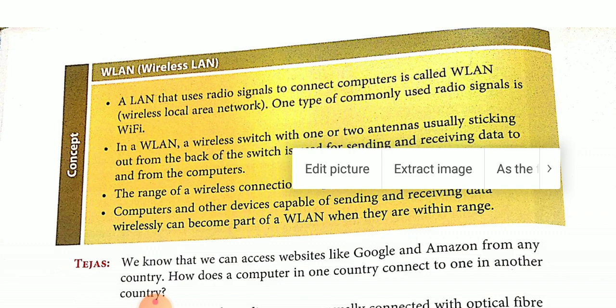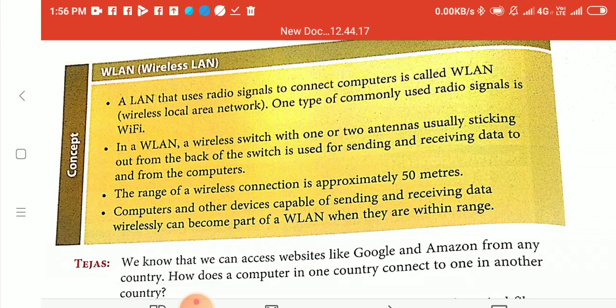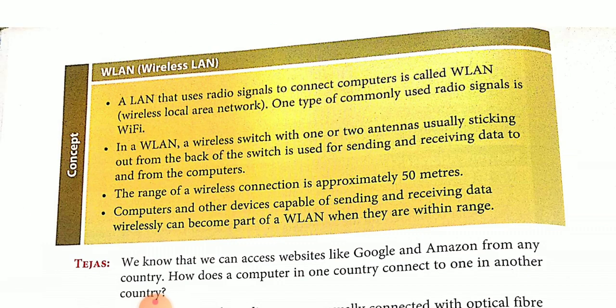Another name for WLAN is Wi-Fi. In a WLAN, a wireless switch with one or two antennas usually sticking out from the back of the switch is used for sending and receiving data to and from computers. The range of a wireless connection is approximately 50 meters. Computers and other devices capable of sending and receiving data wirelessly can become part of a WLAN when they are within range.